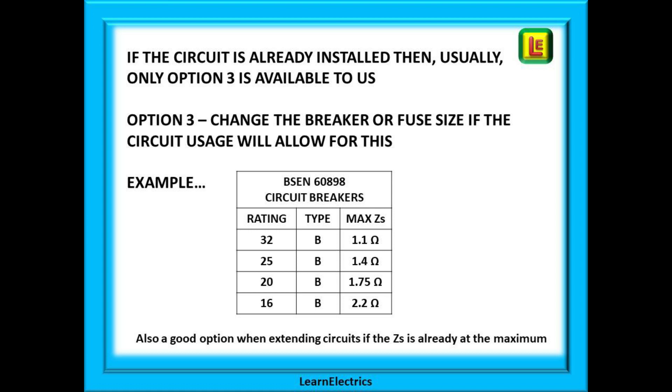This table shows some examples. This is also a good option when extending circuits. If the ZS is already at or near the maximum and you know that extending the cables will exceed the ZS requirements, installing a smaller breaker will increase the permitted ZS that you have available. Just like the seesaw, if we make the circuit breaker size lower then the permitted ZS will go higher. Imagine that we have just measured the ZS and it is 1.3 ohms. The table shows that this is too high for a 32 amp breaker. It has a maximum of 1.1 ohms. But we could change the 32 amp breaker for a 25 amp breaker that has a maximum ZS of 1.4 ohms. 1.4 ohms maximum is less than 1.3 ohms measured, so this circuit will be safe.